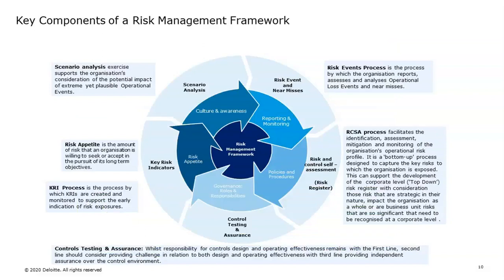Looking at the key components of a risk management framework: starting at the top right-hand side, we're looking at risk incidents or events and the process that supports identifying and reporting those risk events, and the opportunities to learn from those events as they arise. Likewise, any near misses that may arise provide valuable insights into issues and how one can remediate those types of issues to prevent them happening in the future. This feeds into your RCSA — risk and control self-assessment process — which ultimately facilitates the development of risk registers within organizations.